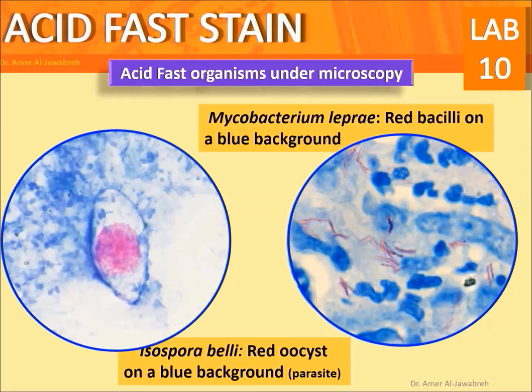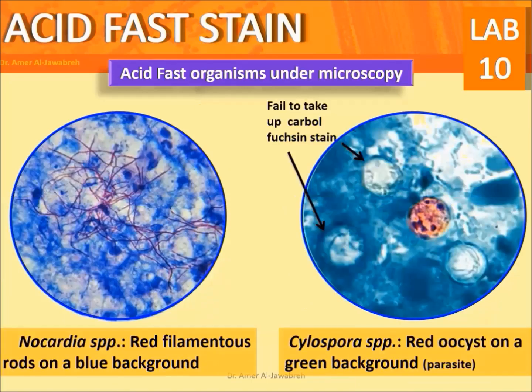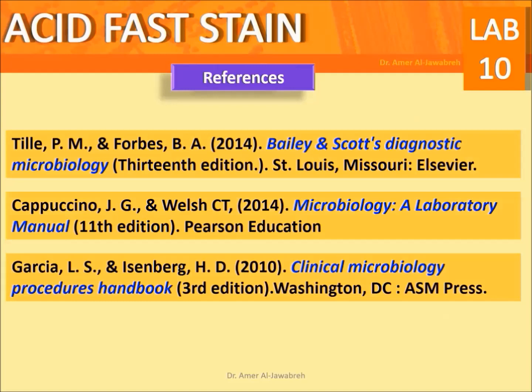Mycobacterium leprae: red bacilli on a blue background. Isospora belli: red oocysts on a blue background (parasite). Nocardia species: red filamentous rods on a blue background. Cyclospora species: red oocysts on a green background (parasite). Thank you.